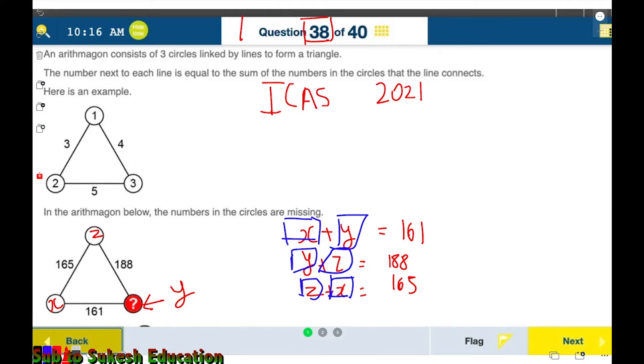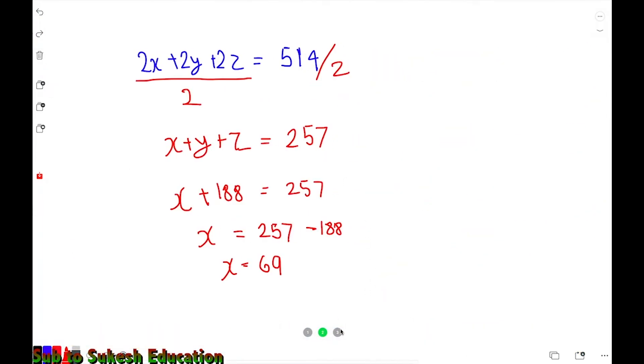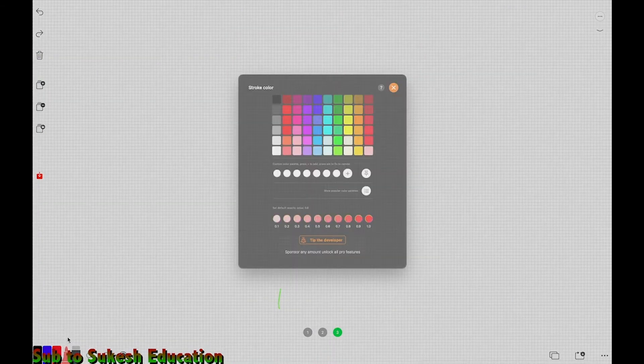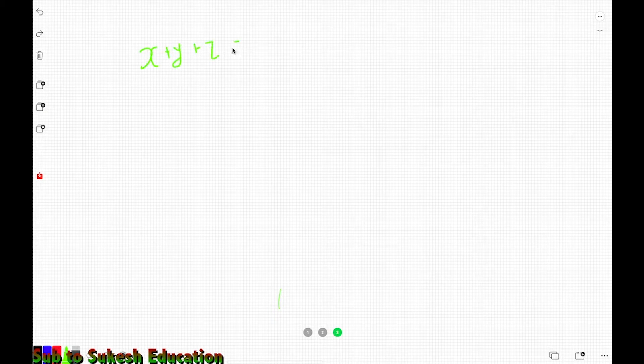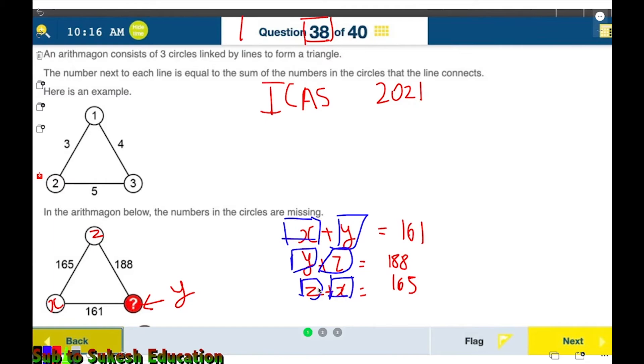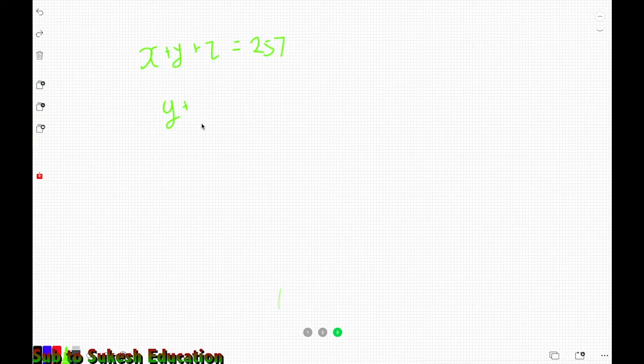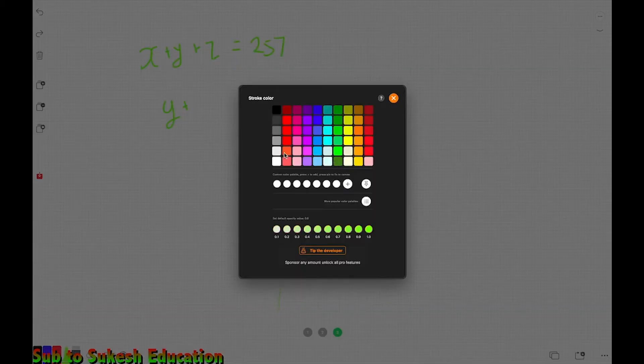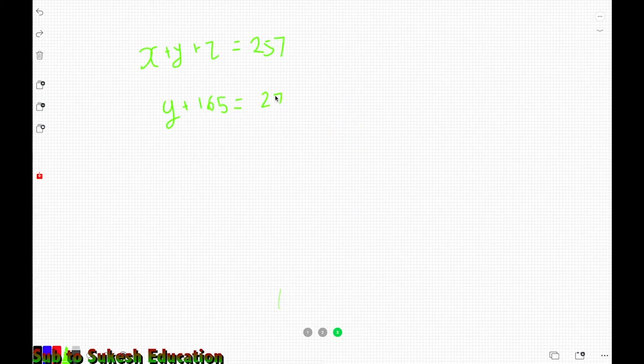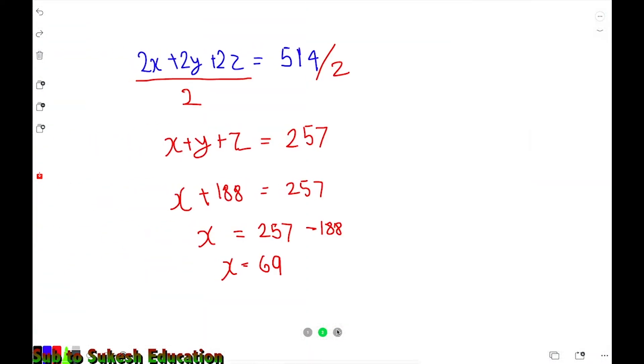How do you find y? We basically have to substitute just like we did before. Substituting in x plus y plus z equals 257, to find y we need y plus x plus z, and x plus z is 165. So y plus 165 equals 257, which means y equals 257 minus 165, which is 92.